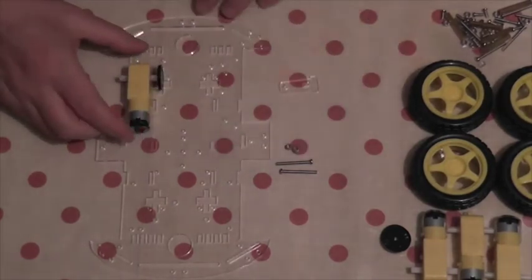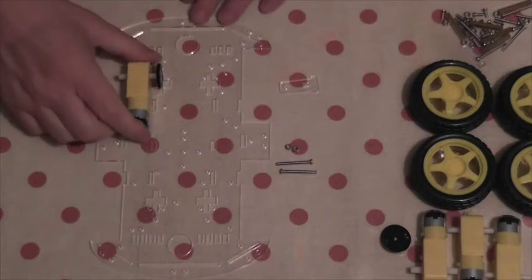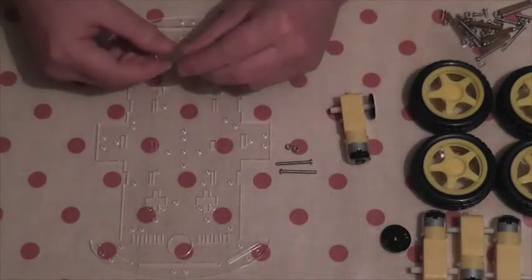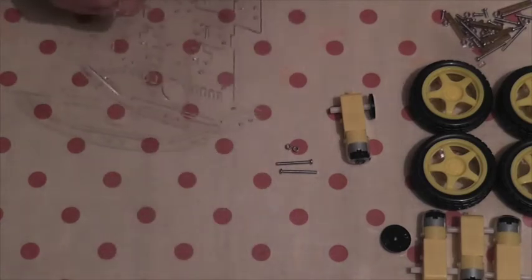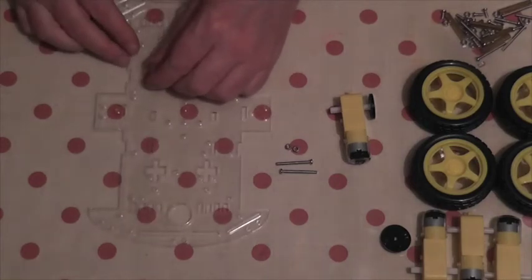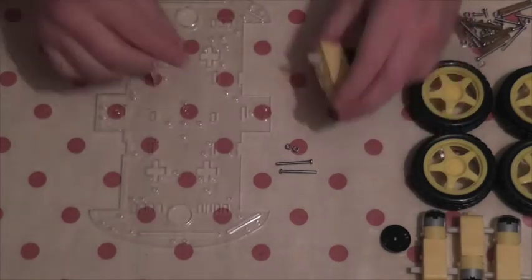One motor will be mounted at each corner, like so. To mount the motor, we'll use one of these plastic spacers. We'll insert this into the underside of one of the plastic plates. This will be used to mount the motor against.